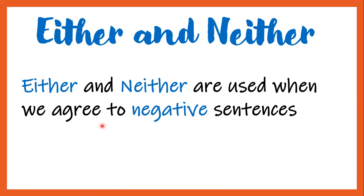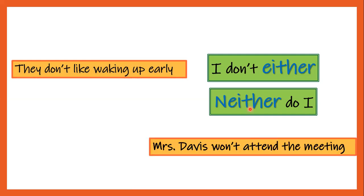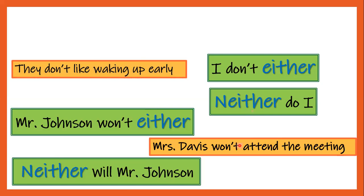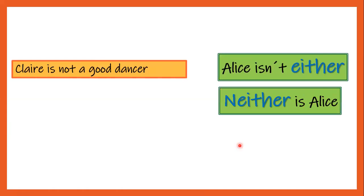For example: 'They don't like waking up early — I don't either / Neither do I.' The main difference between either and neither is just the word order. Either goes at the end of the sentence, and neither goes at the beginning of the sentence. Another example: 'Mr. Davis won't attend the meeting — Mr. Johnson won't either / Neither will Mr. Johnson.' And: 'Claire is not a good dancer — Alice isn't either / Neither is Alice.'